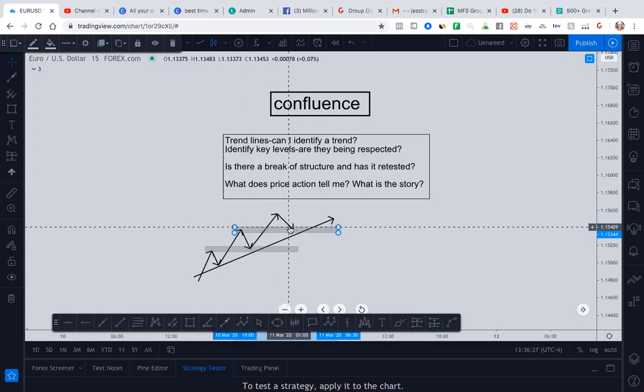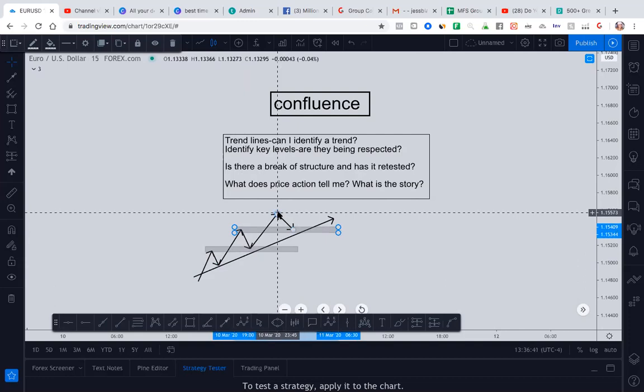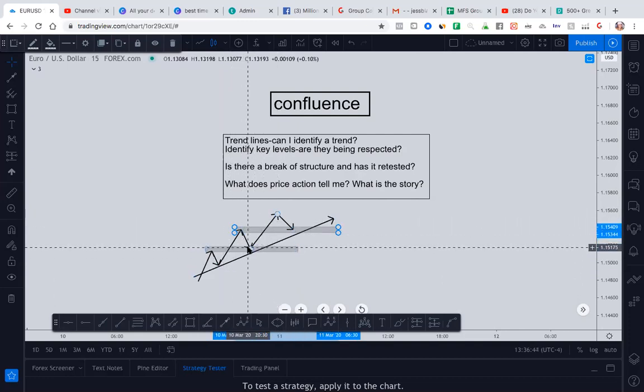So identifying your levels and market structure are going to be very important. Most likely your levels are going to be at an area of market structure as well. So you want to make sure if there is a break, remember this is a buy because we're going up. We don't buy high, we buy low. Okay. We buy low and we sell high.